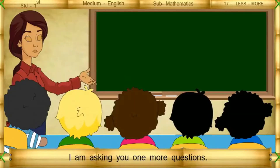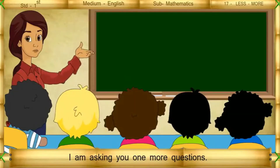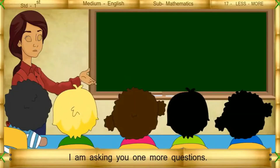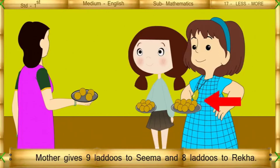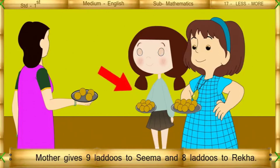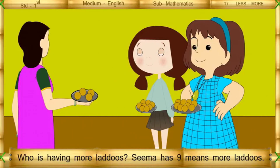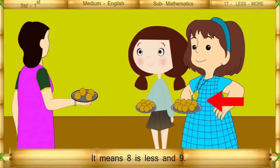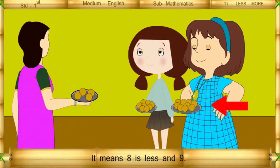I am asking you one more question. Mother gives 9 laddus to Sima and 8 laddus to Rekha. Who is having more laddus? Sima has 9, meaning more laddus. It means 8 is less than 9.